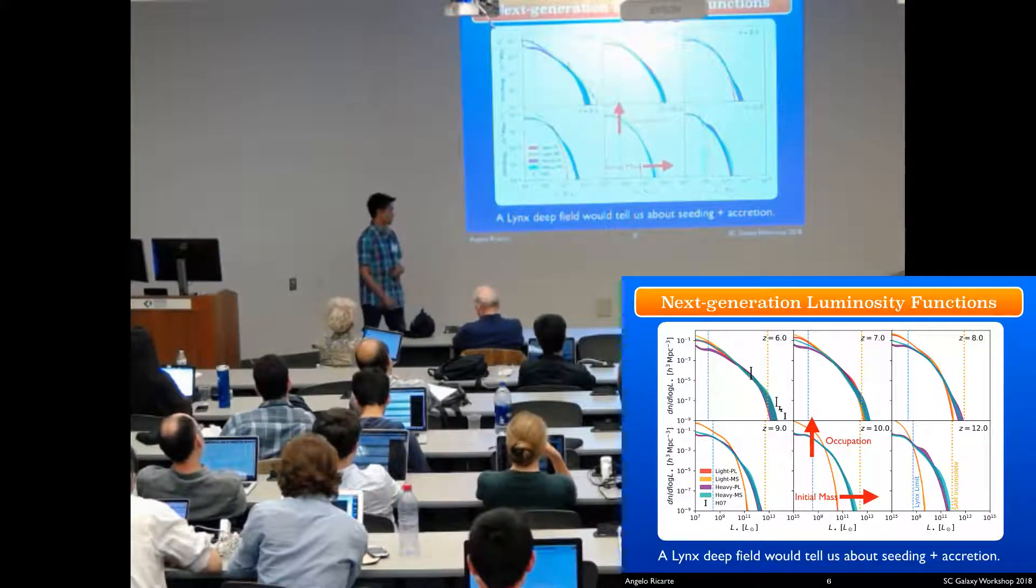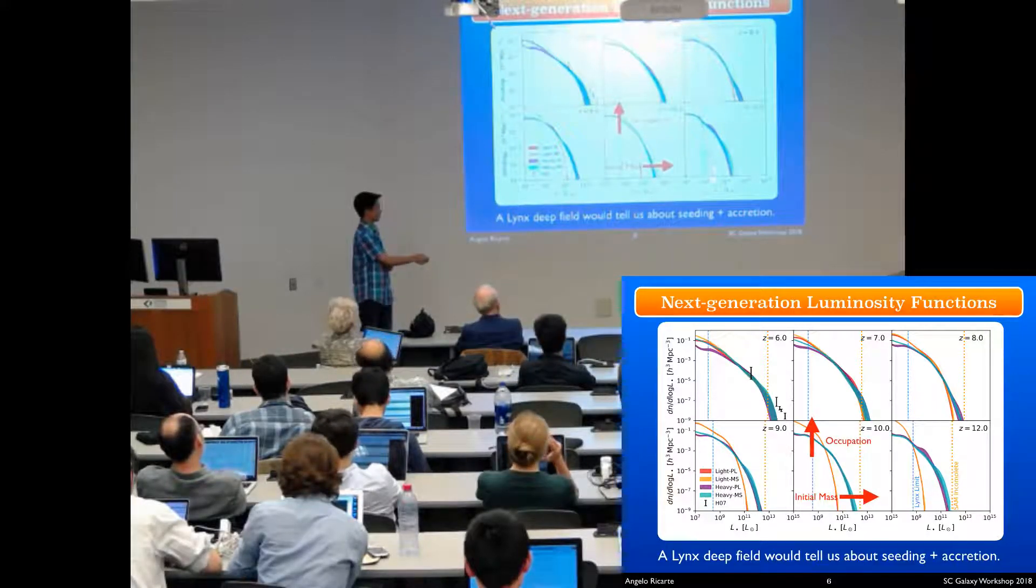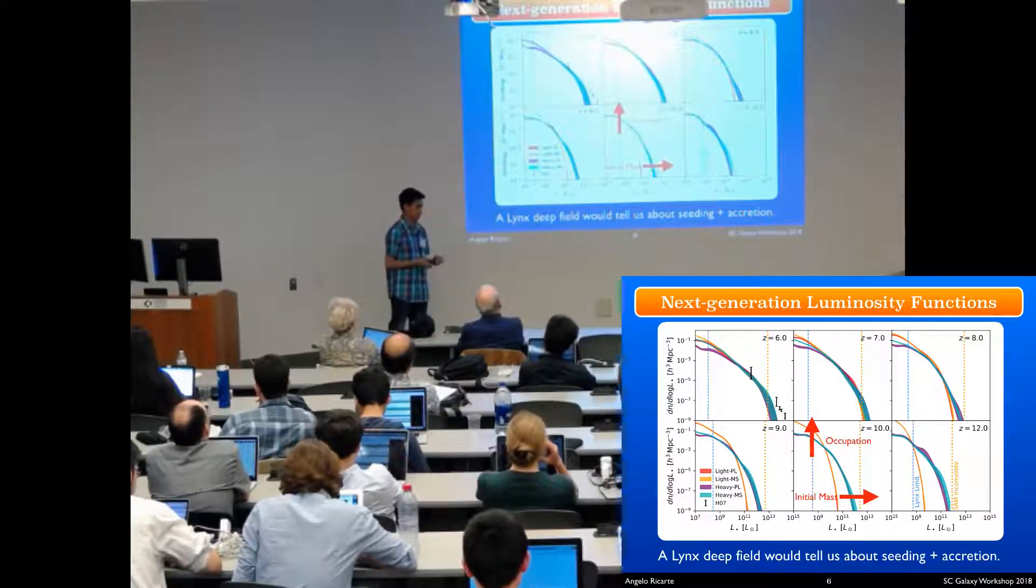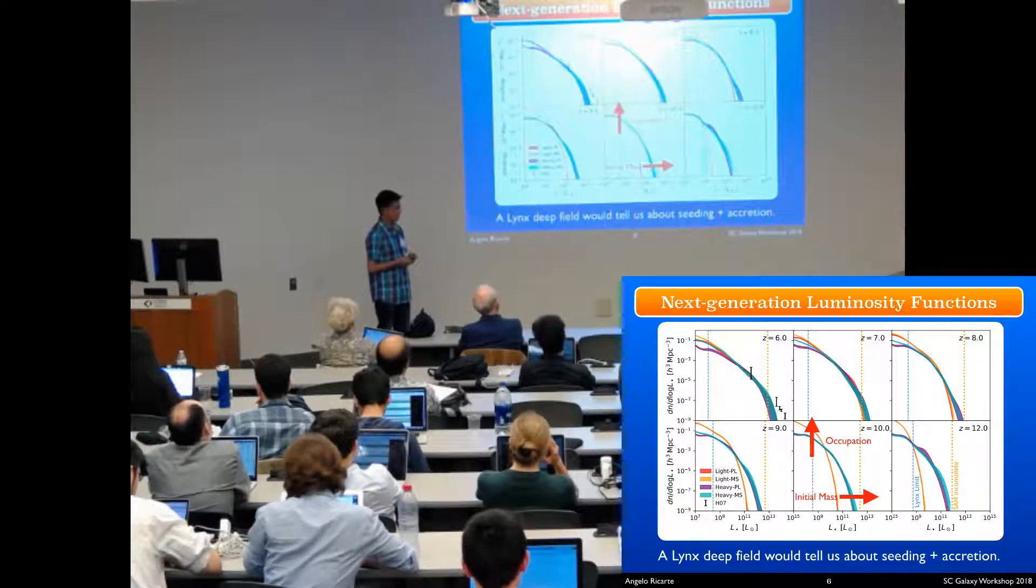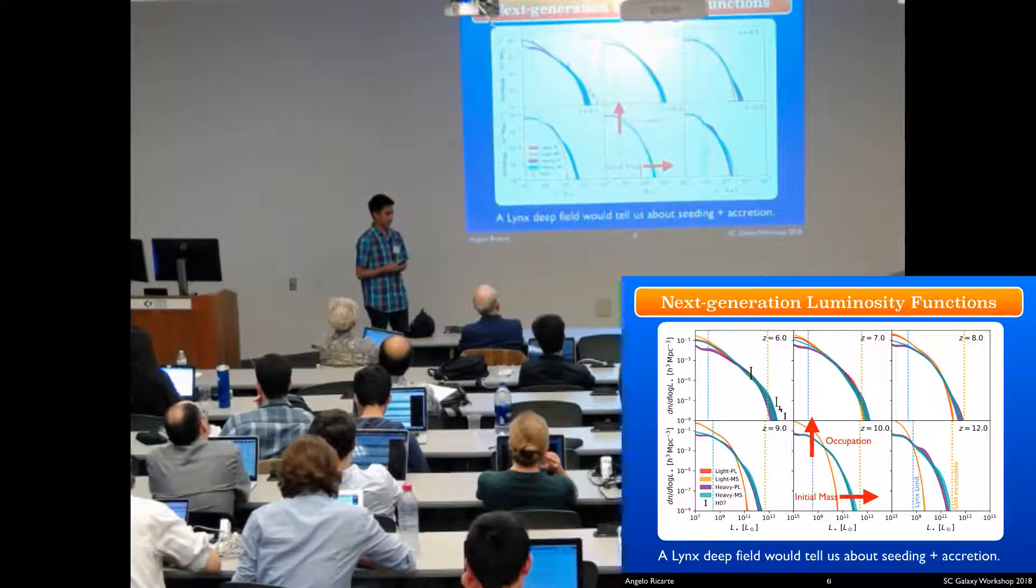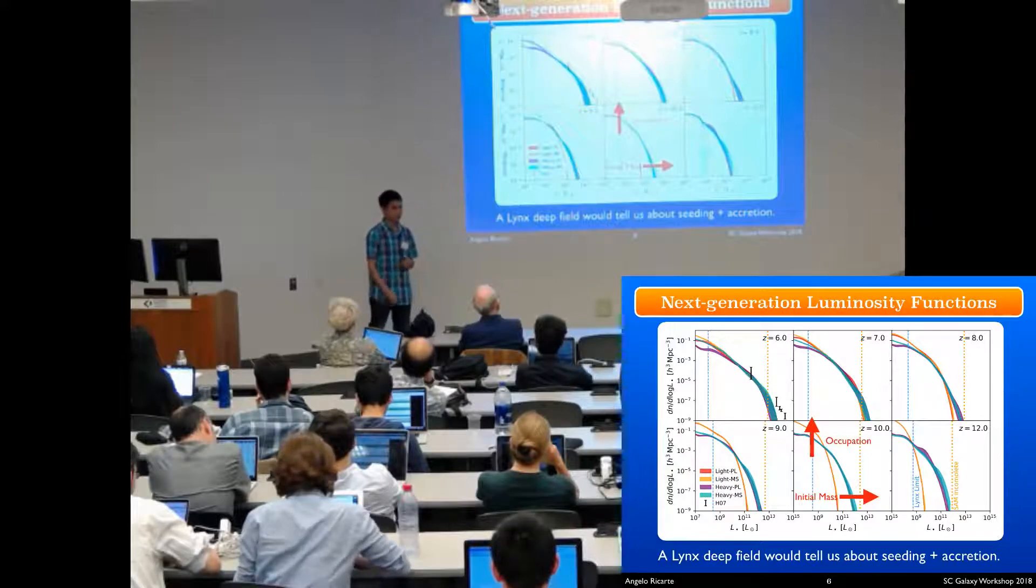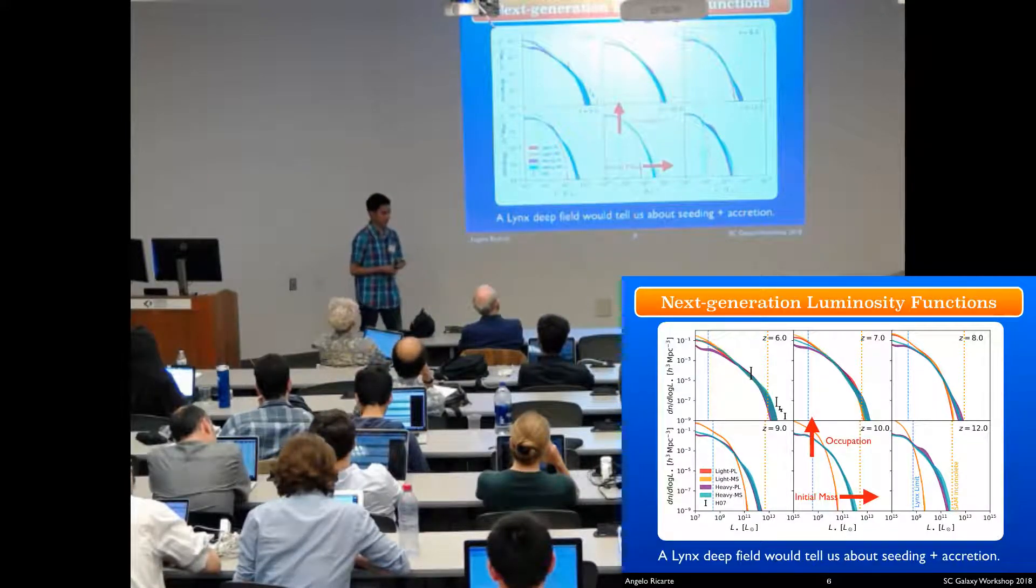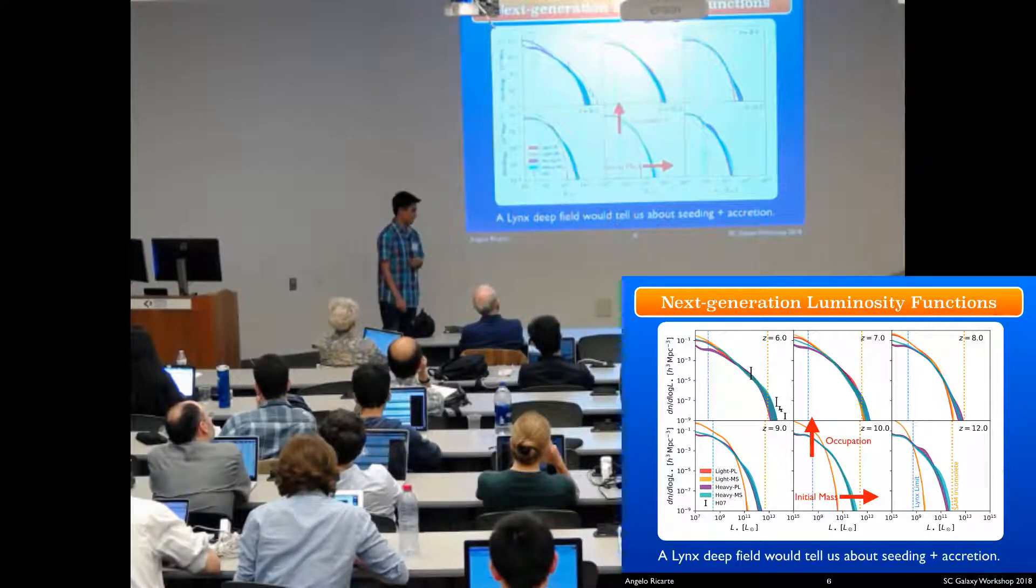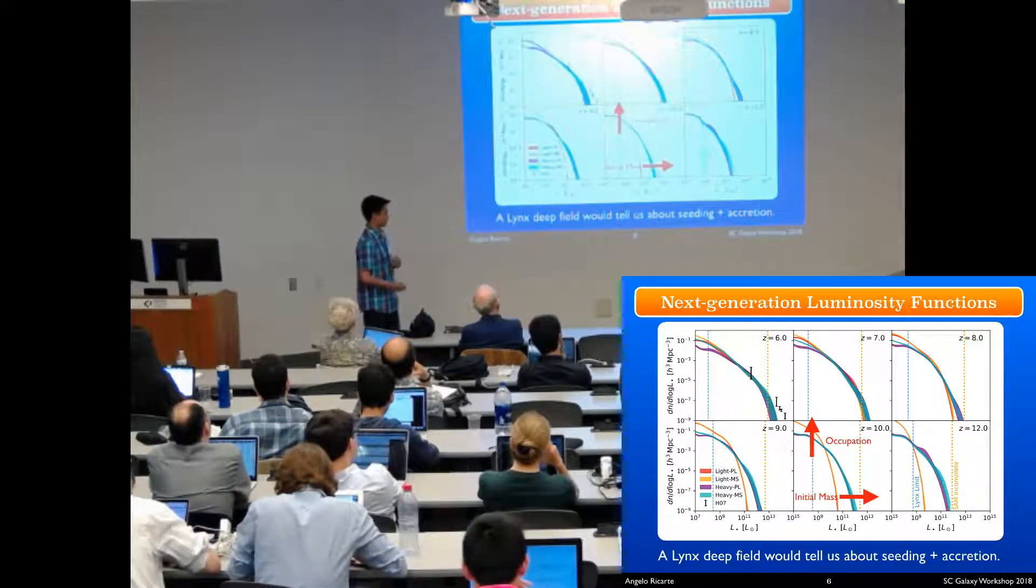A Lynx deep field, for example, could tell us about the seeding mechanism. This dashed blue line is the limit of a Lynx deep field if 10% of the flux was radiated in the X-ray. However, there are degeneracies that have to do with the accretion. Remember I said we assumed that when a merger occurs, a black hole turns on at the Eddington rate. Changing the duty cycle or the average Eddington ratio will move these curves around as well. So it's important to model as many different things as possible to produce a self-consistent picture and break degeneracies.